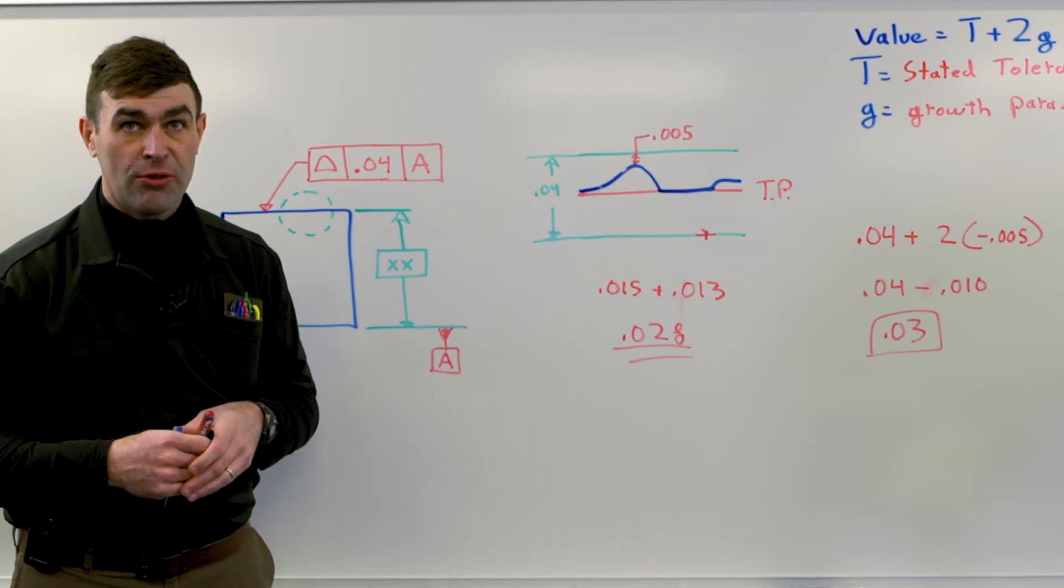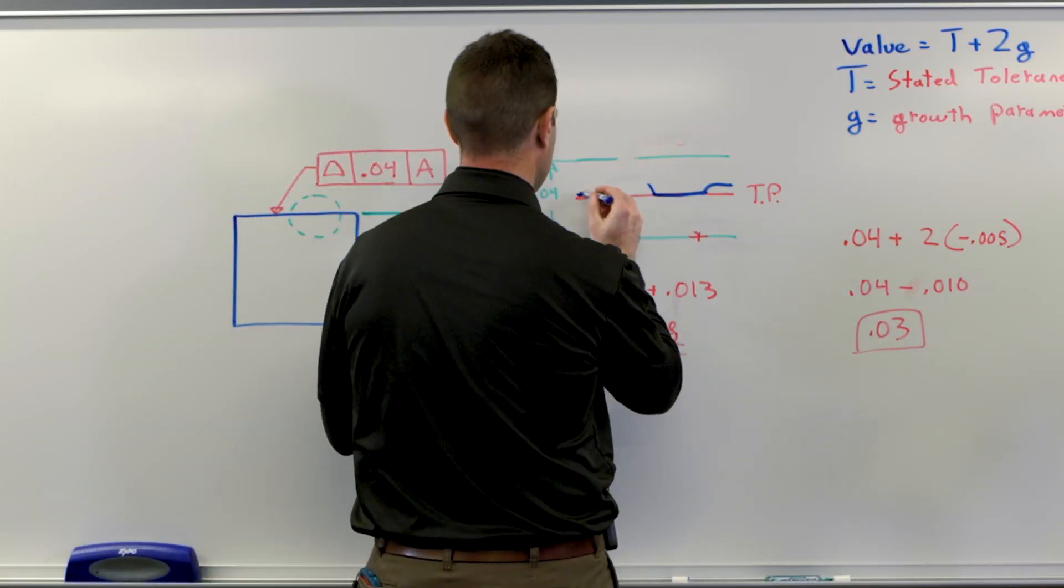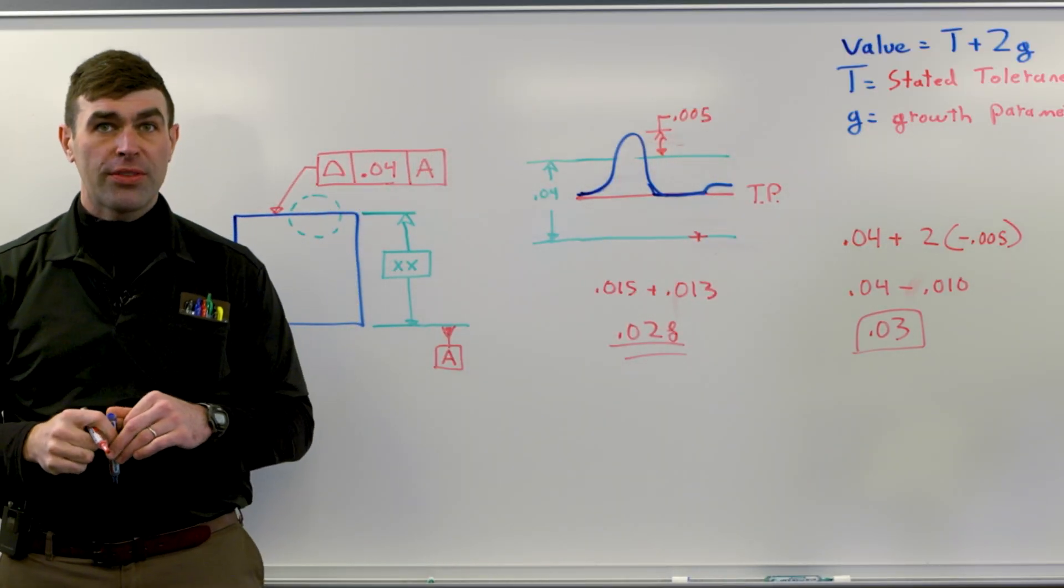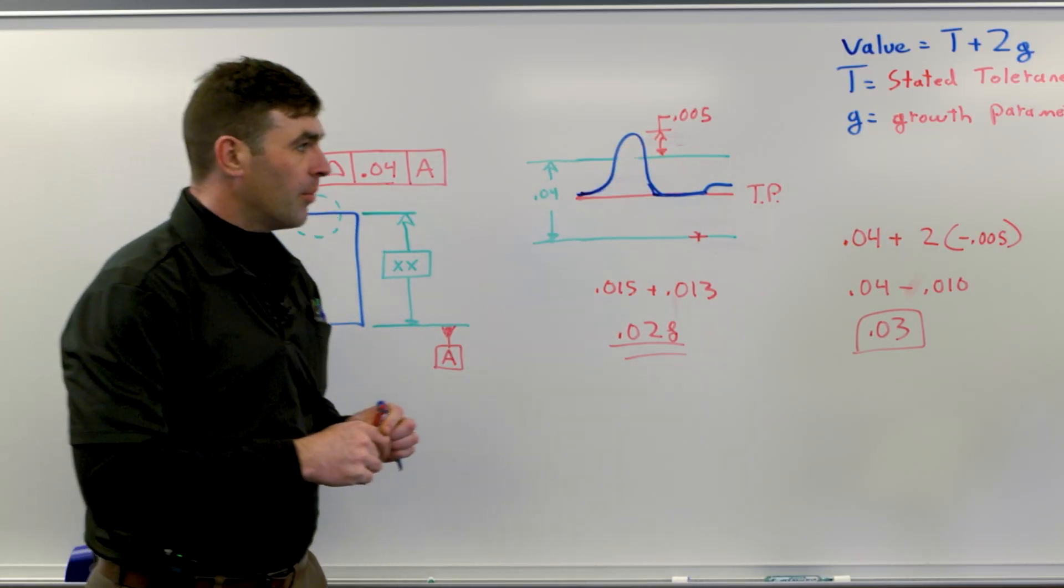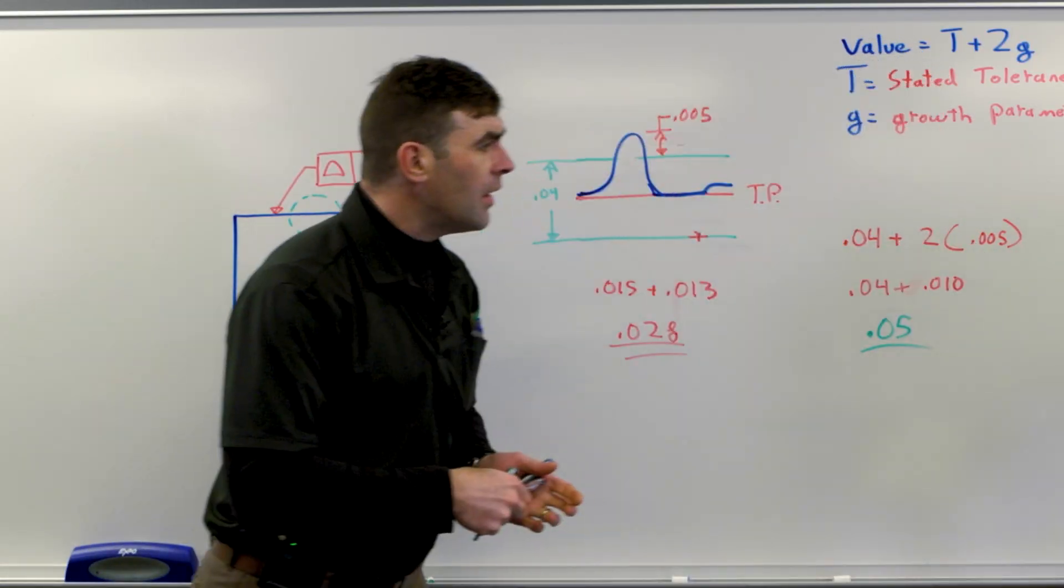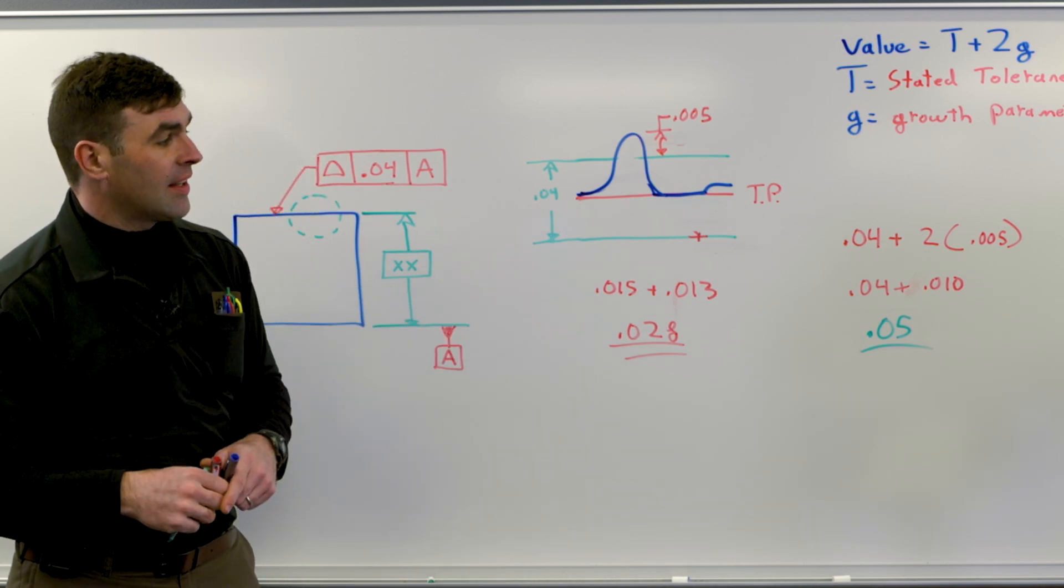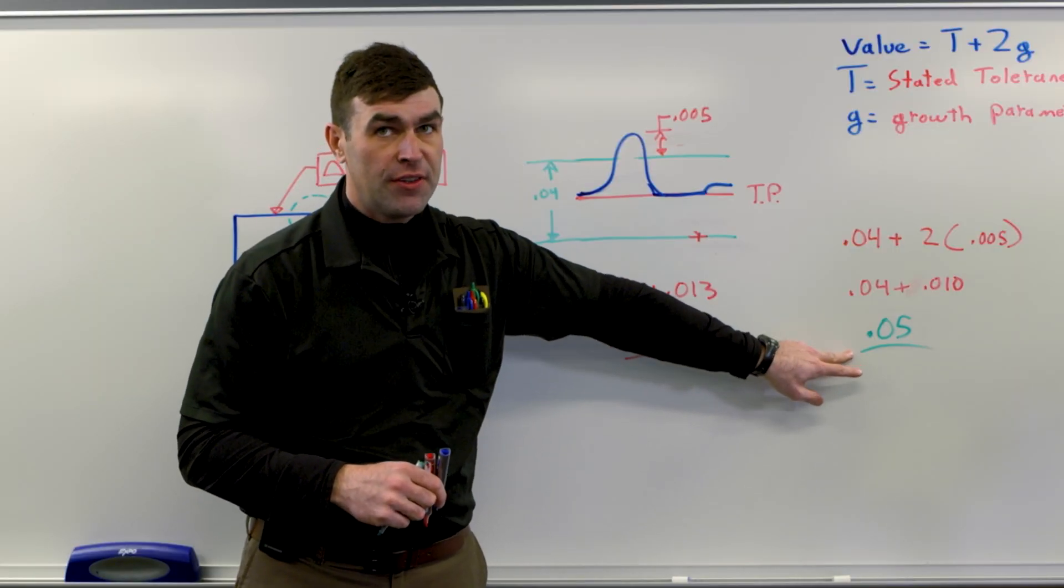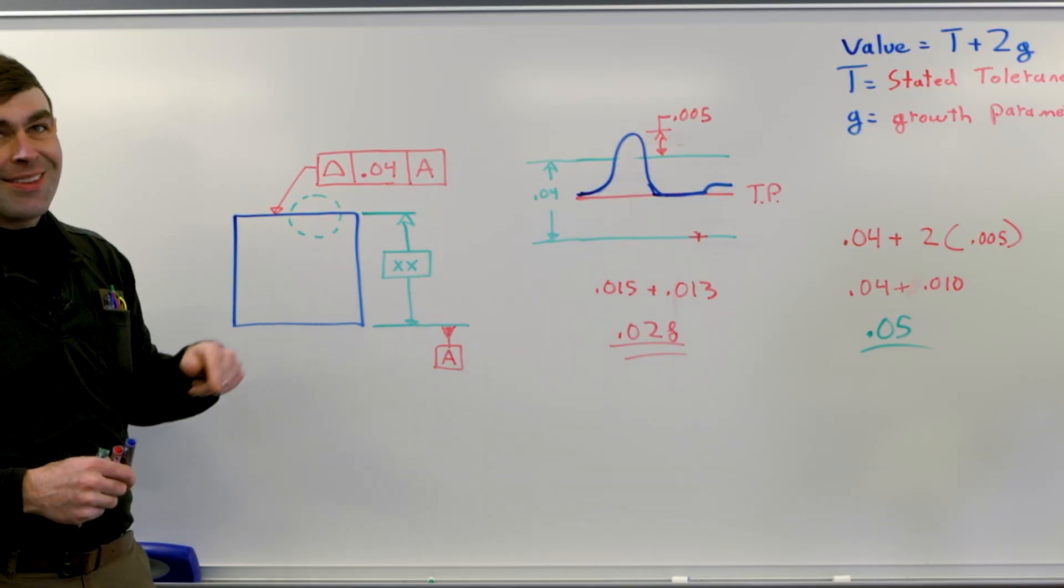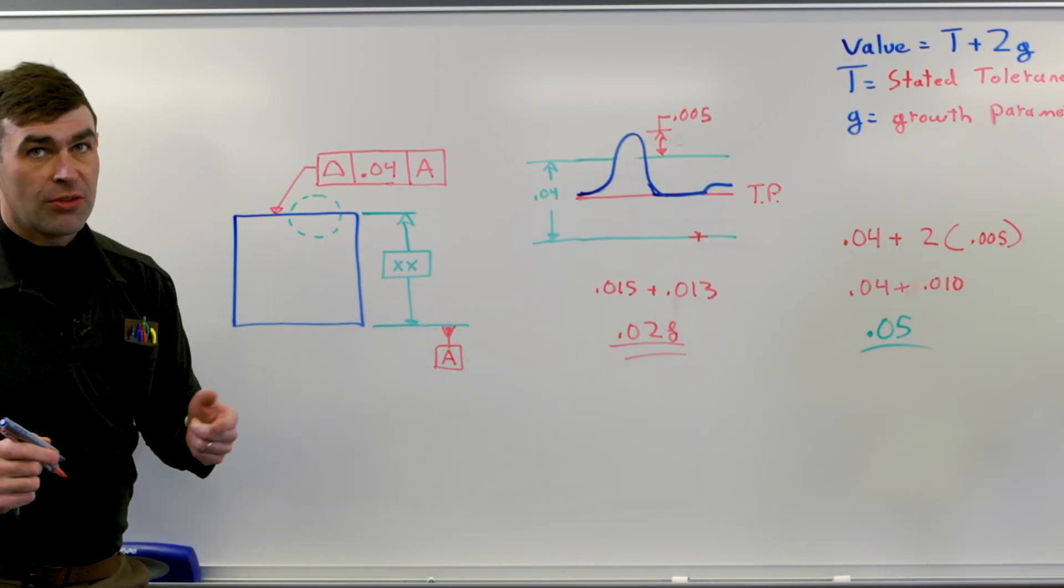When you put this exact same part on a coordinate measuring machine, it's going to measure thirty, right? So you have this disparity here, and that's the point of this video to explain that disparity. If the surface is outside of the tolerance zone boundary, this becomes a positive number. So when we make that positive, it's going to be additive to the stated tolerance, and what we report, our actual profile, is fifty, which is much larger than this. The part would fail. And we can see that by inspection right here, just looking at it, but that's the methodology.